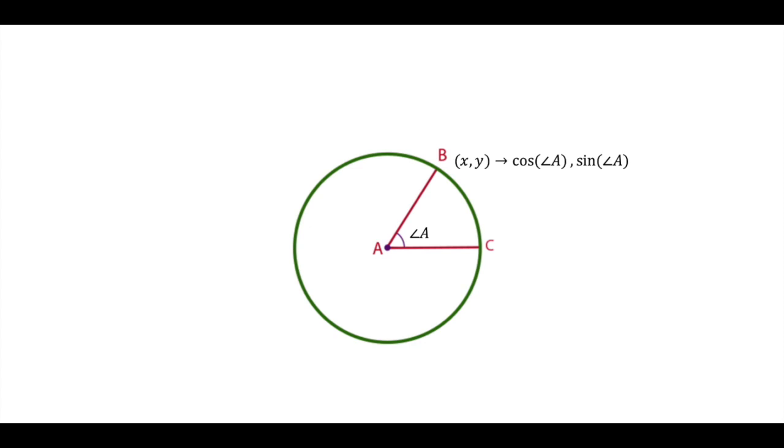For a given angle, the sine of that angle is the y-dimension on the unit circle, and the cosine of that angle is the corresponding x-dimension.